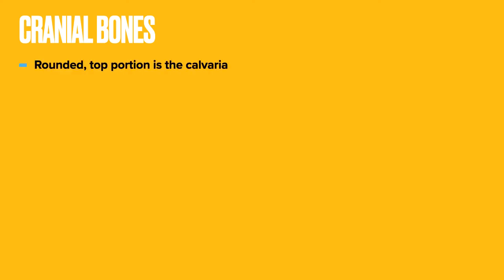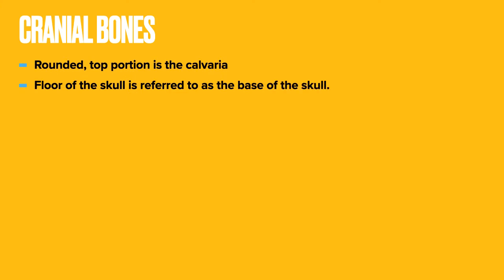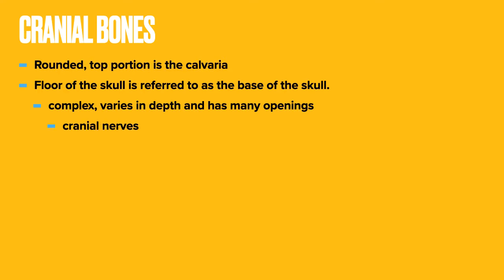When we talk about the cranial bones, we can divide them into two areas. The rounded top portion of the cranial cavity is called the calvaria, which is relatively smooth compared to the floor of the skull, referred to as the base of the skull. The base is more complex than the calvaria — it varies in depth and has many openings for cranial nerves, blood vessels, and the spinal cord.